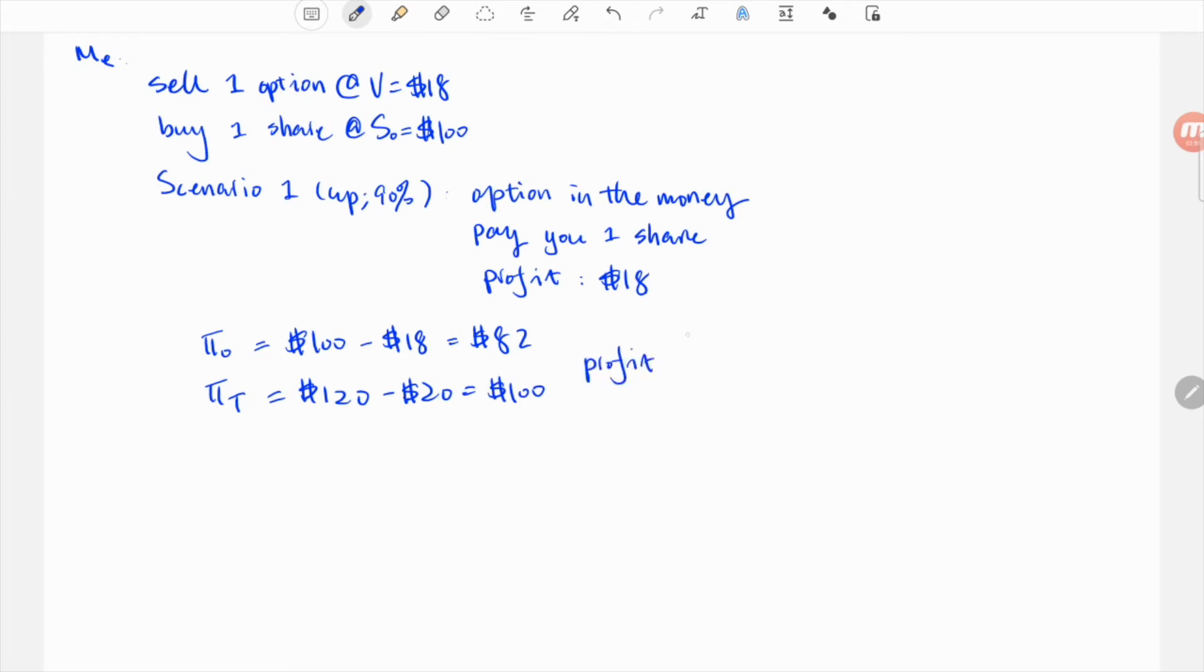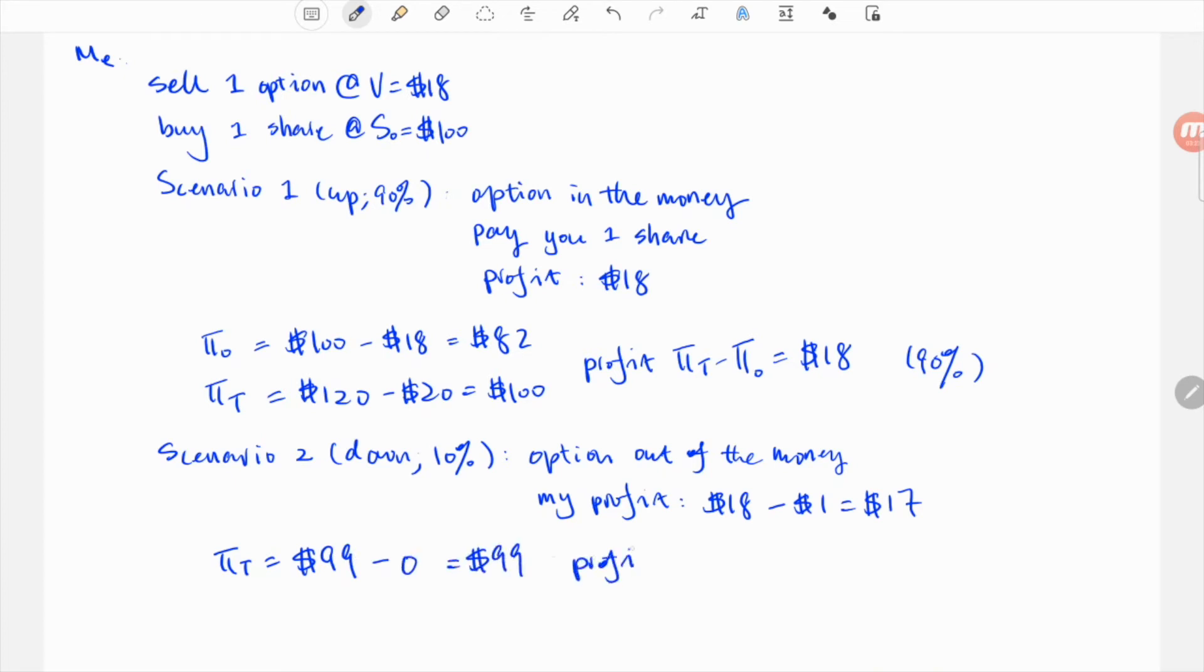Now let's see the other scenario when the stock goes to $99. The option matures out of the money and it becomes worthless. You lose $18 premium you paid me for the option, while for me I made $18 from the option but lost $1 from the underlying that I long, so in total I still made $17.